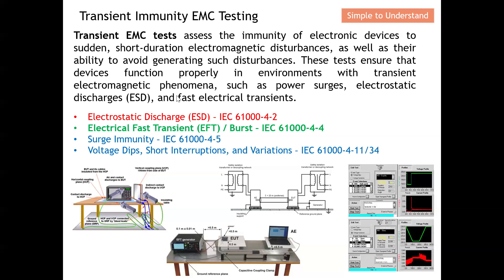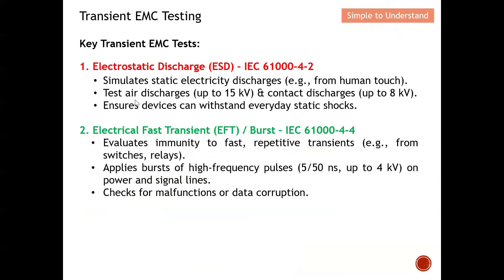There are actually four types of transient tests. The first is electrostatic discharge — this video we will concentrate on EFT burst. We also have surge immunity and voltage dip. Let's go through briefly all four different types of transient EMC tests.